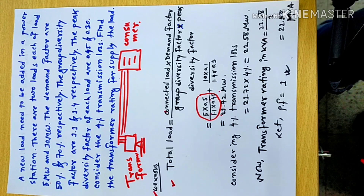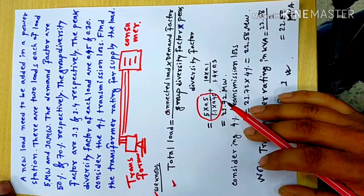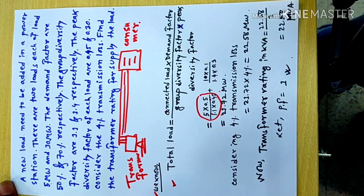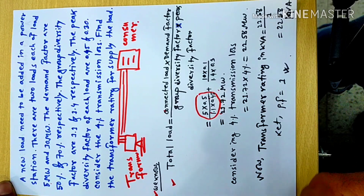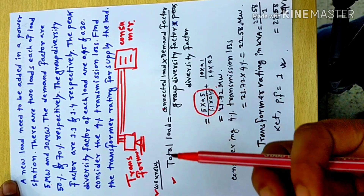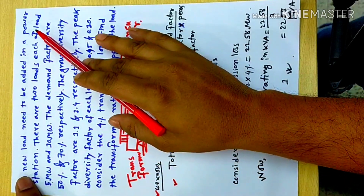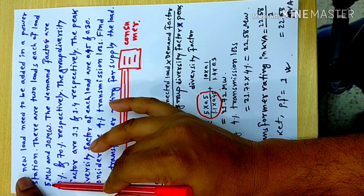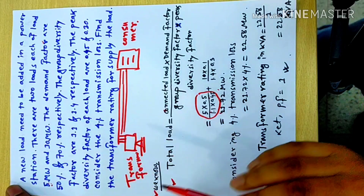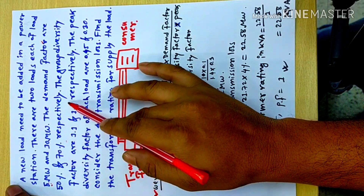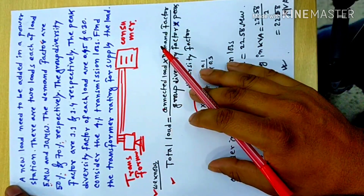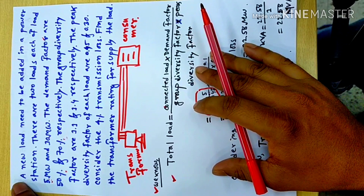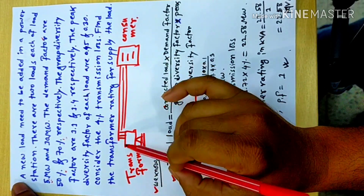Recently, the North-West Power Generation Company said that a new load needs to be added to the power station. A high-quality acceleration makes the demand factor quite vague. The company says that 50% to 70% group industry load is to be added.